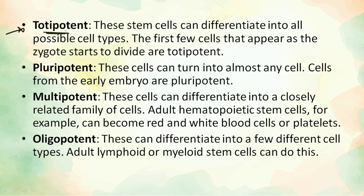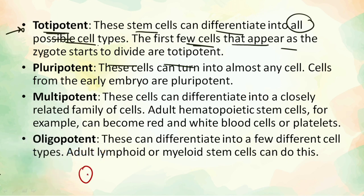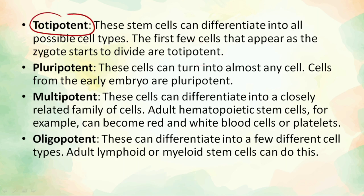Totipotent stem cells can differentiate into all the possible cell types. The first few cells that appear as the zygote starts to divide are totipotent — that is, initially after the zygote, some cells can produce every type of new cell. Remember it this way: T for totipotency and T for total — total means all. So when a cell has the possibility to divide into all possible cell types, it is totipotent.